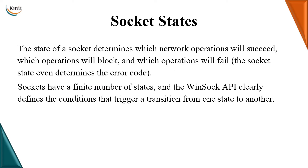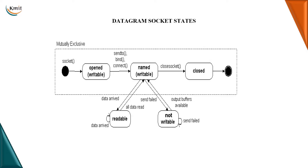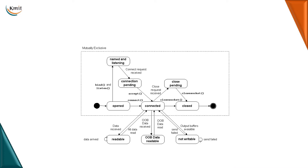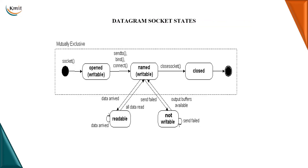Coming on to socket states — every socket will have different states. These states determine which network operations will succeed, which will be blocked, or which will fail. Sockets have a finite number of states. We have datagram socket states for datagram sockets, and stream socket states for stream sockets.